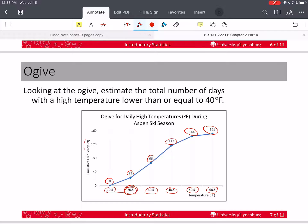And over here, we have the cumulative frequency as our measure on the vertical axes. So if we ask this question, estimate the total number of days with a high temperature that's lower than or equal to 40 degrees. Well, we find this number that's above 40 degrees. It's a boundary, right?